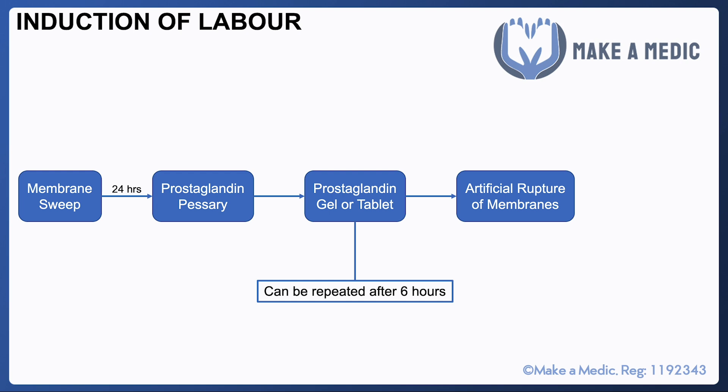If artificial rupture of membranes is also unsuccessful, then syntocinon may be considered. That's an oxytocin analog that helps contract the uterus downwards.